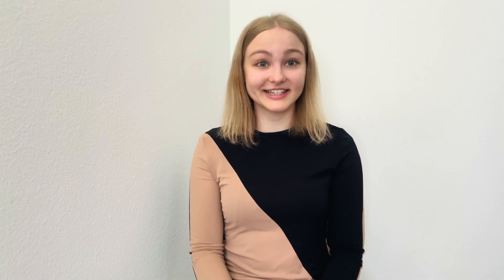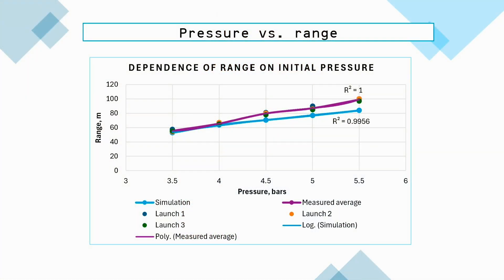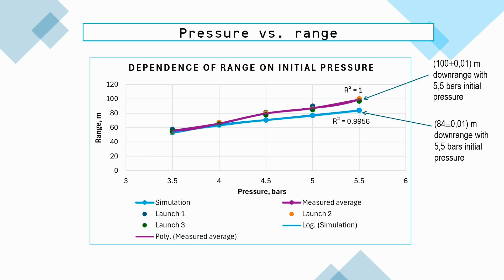Let's explore the findings! As seen in the first graph, both empirical and numerical data revealed a significant nonlinear increase in the downrange with the increase of the initial pressure. A slight deviation of the empirical range from the model is observed at higher pressures, showcasing rather a steep upward curve.